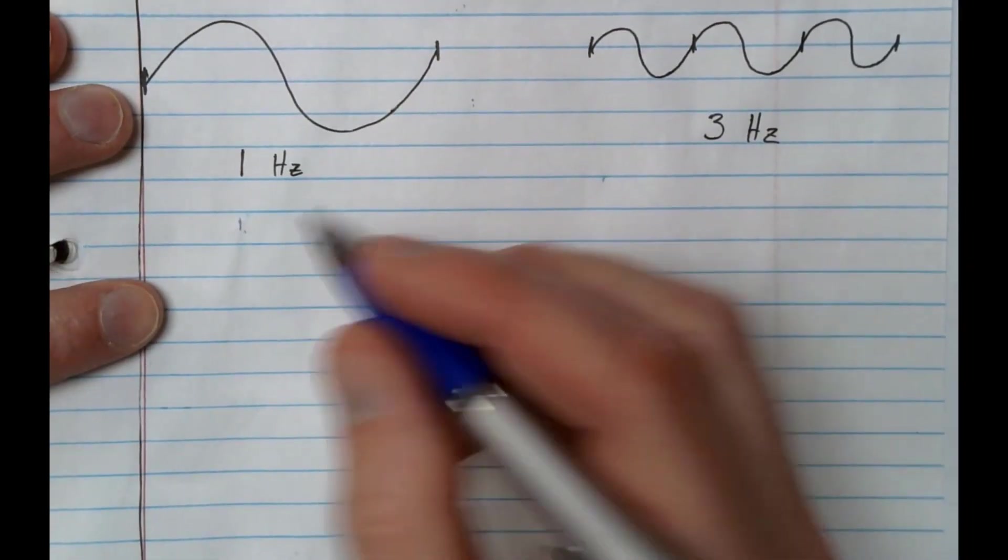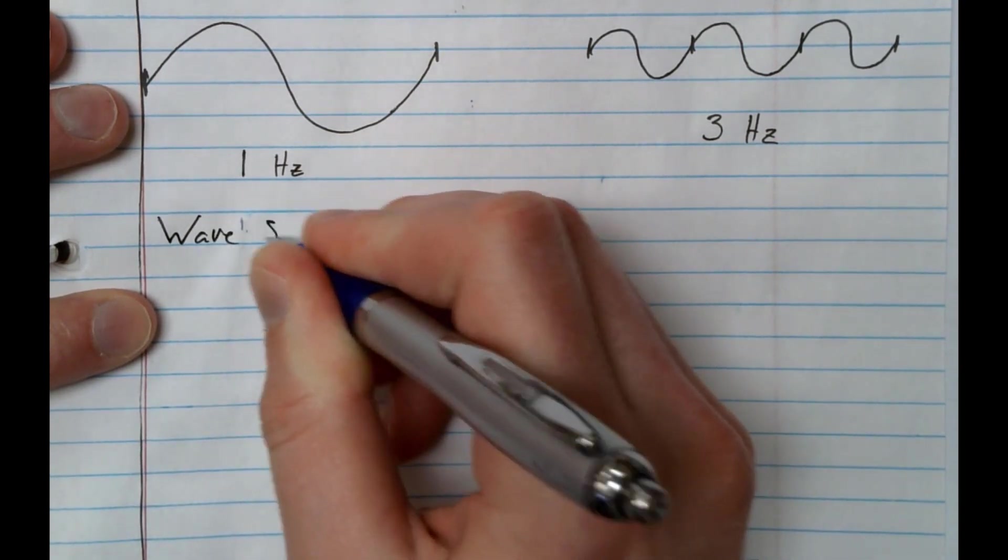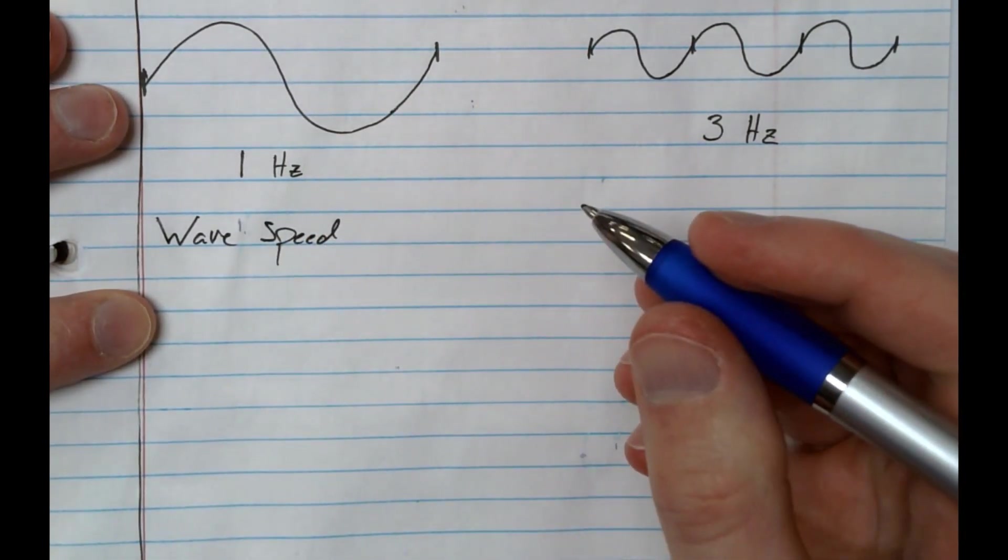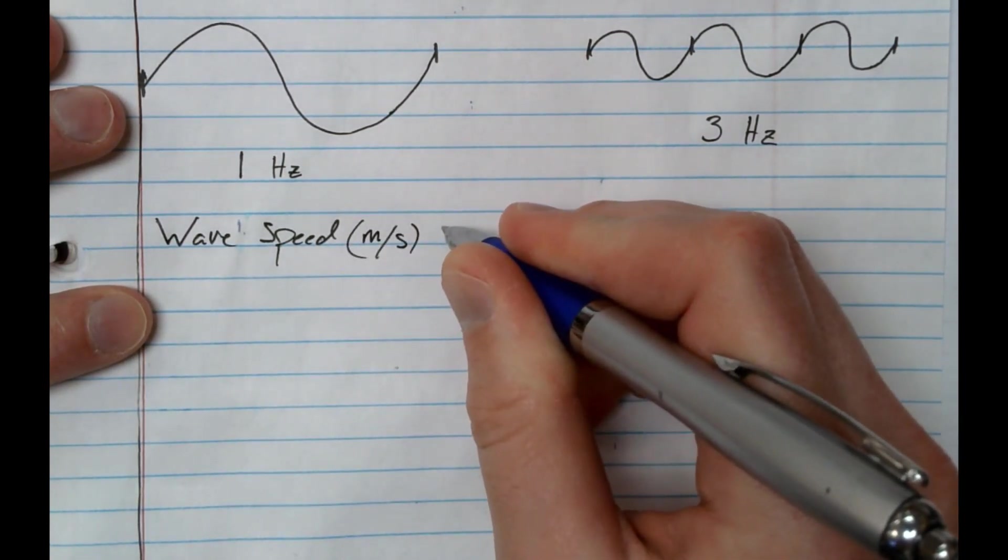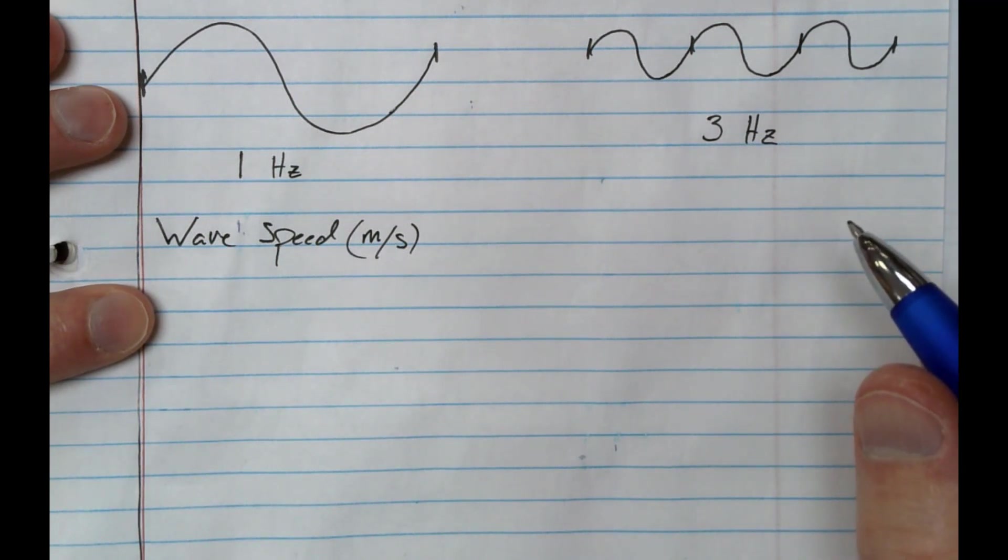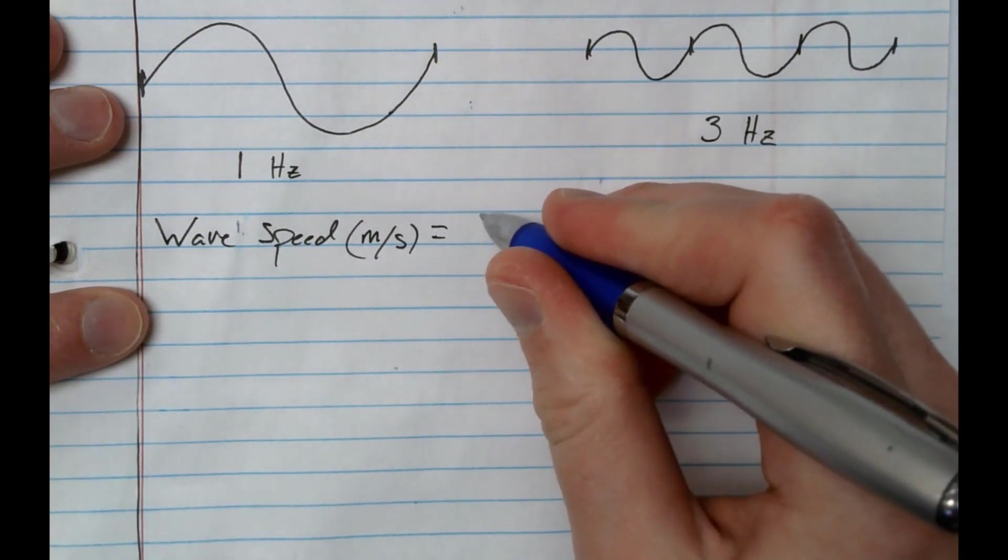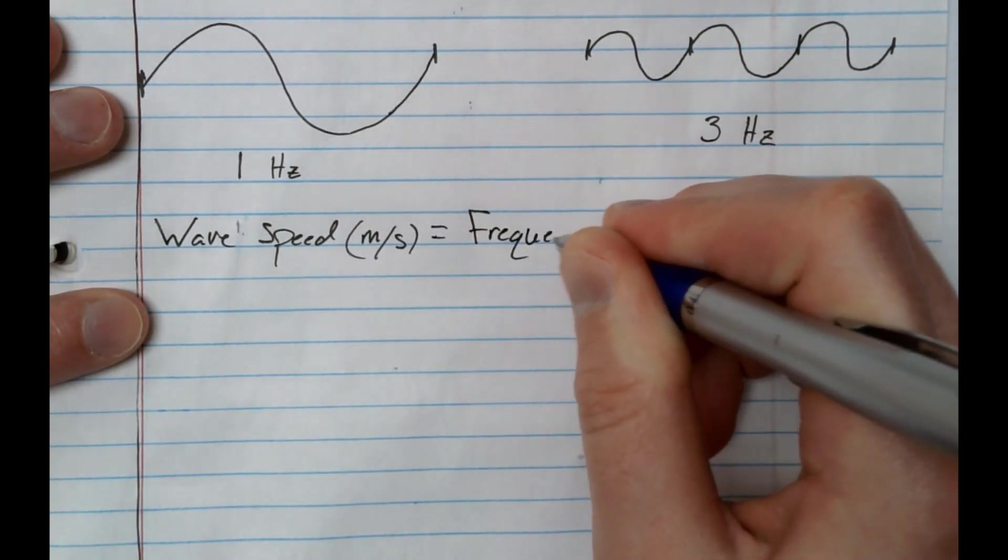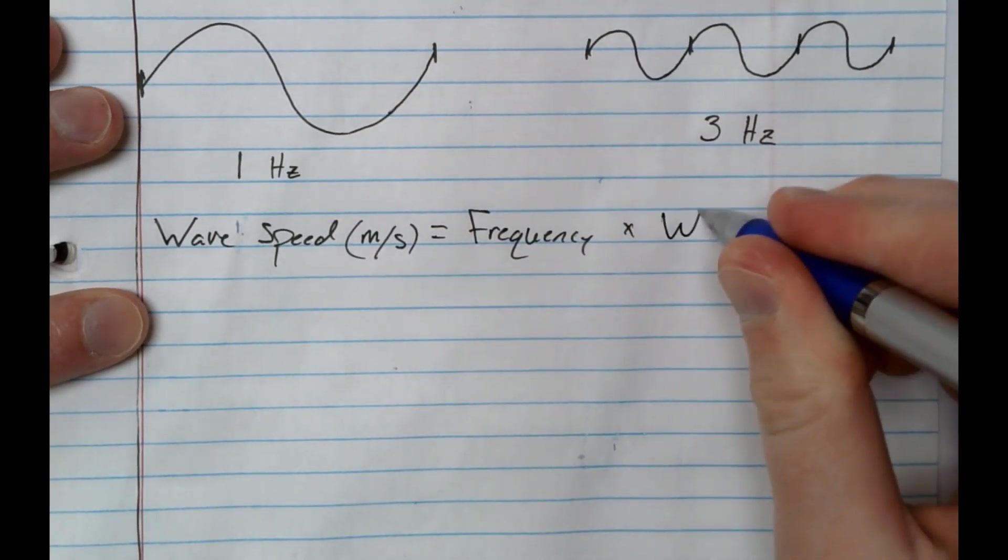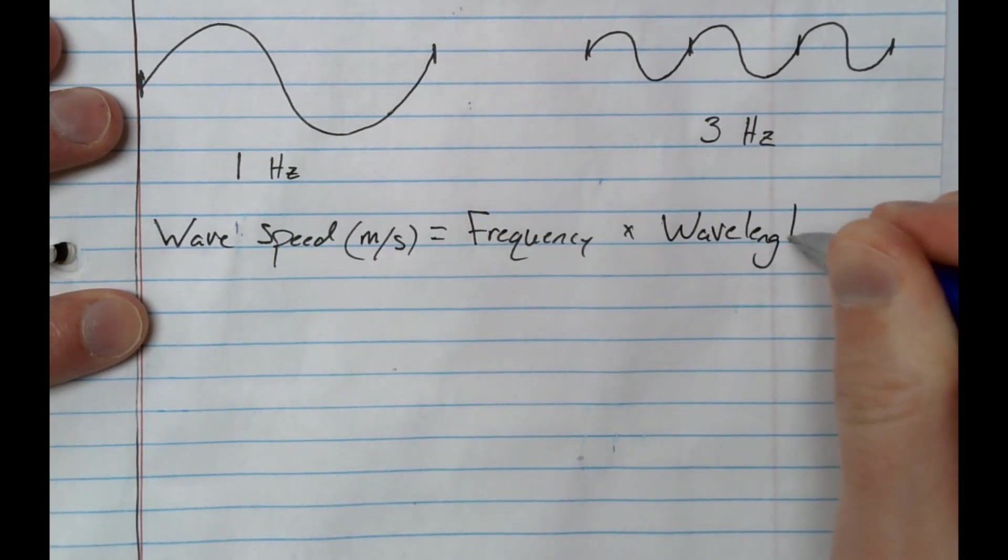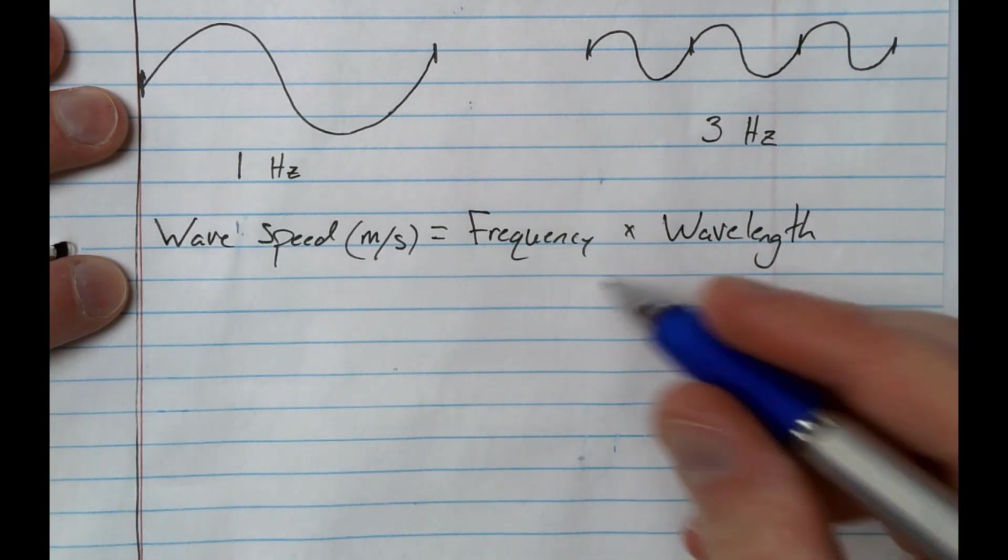Okay, so now the next thing we're going to talk about is wave speed. And we're going to measure that in meters per second. Let's actually just write our equation. So that's going to equal frequency times wavelength. And there's a magic triangle that goes along with this.